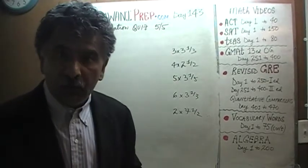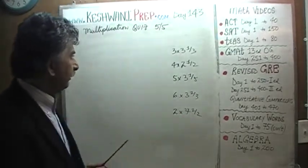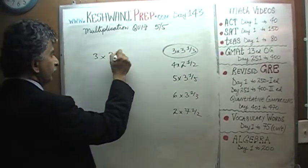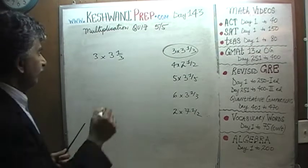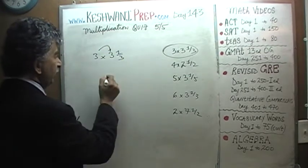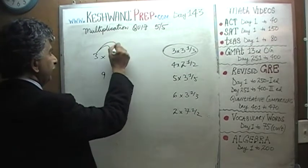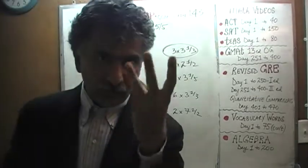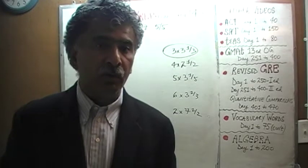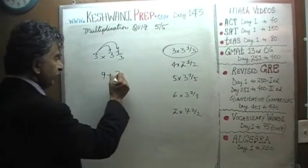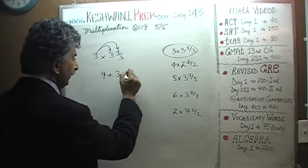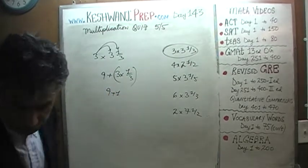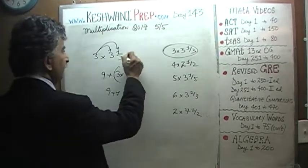The first five problems are already on the blackboard. Let's take a look at them. First one is three times three and one third. Three times three and one third is very simple. We just do three times three, which is nine, and three times one third. Three thirds make a whole, so it's nine plus one, which is ten.